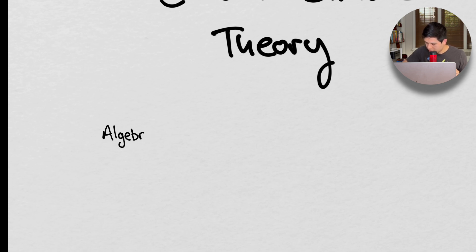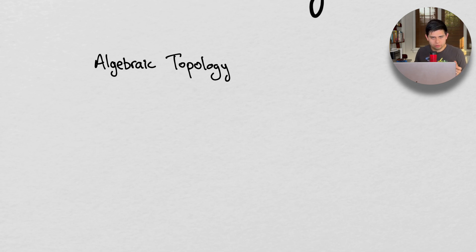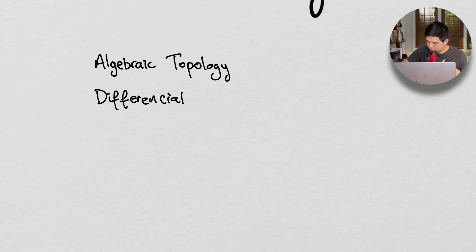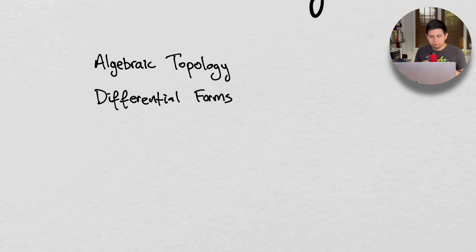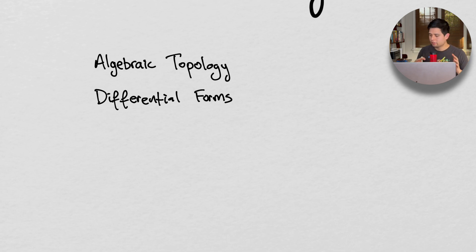So algebraic topology. And we also need to go over differential forms, so we're going to cover differential forms as well. These are really the two things we need to understand: topology and differential forms. The reason we need to understand these things is because Chern-Simons theory is called a topological field theory, and this is what I want to cover before we dive into the topic.